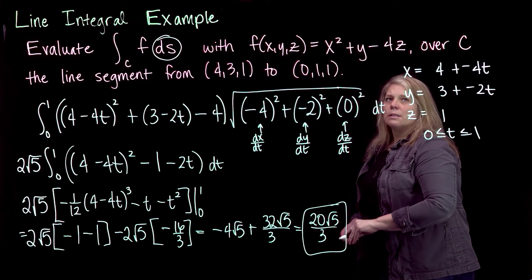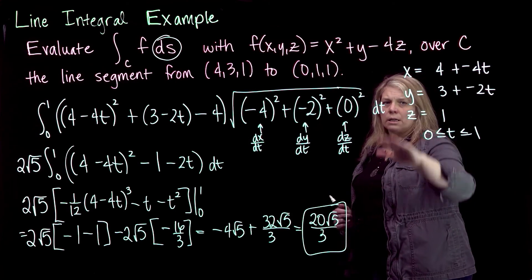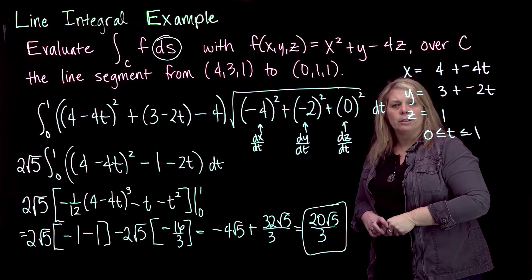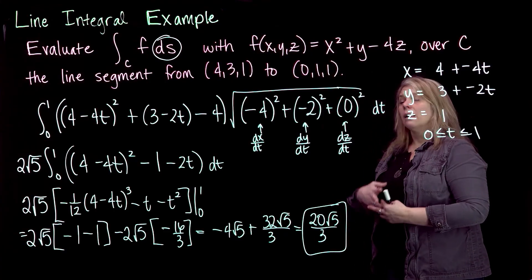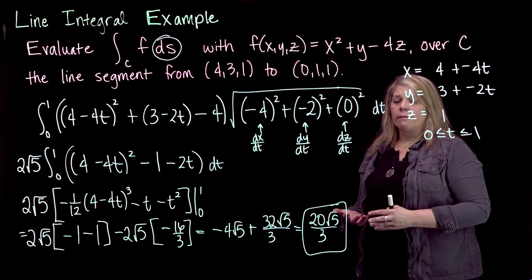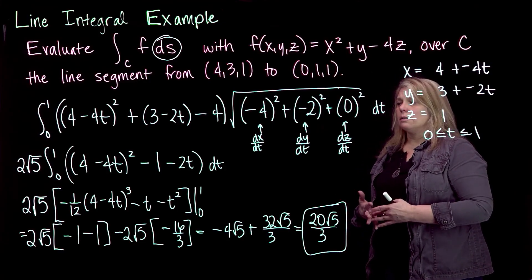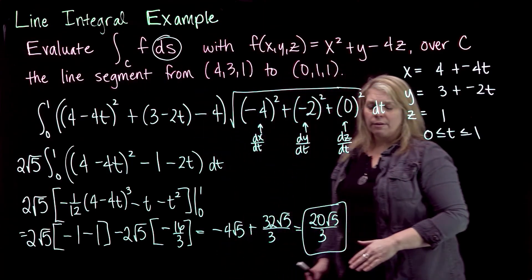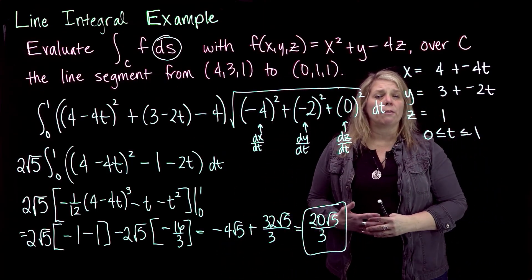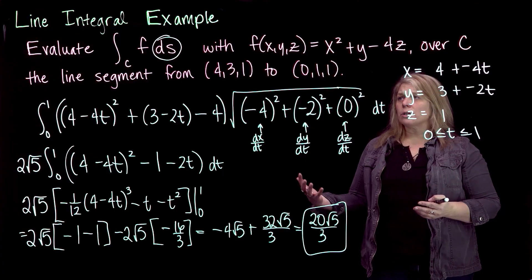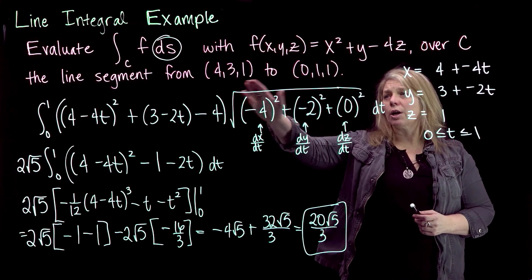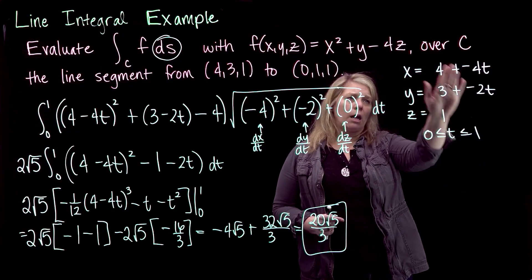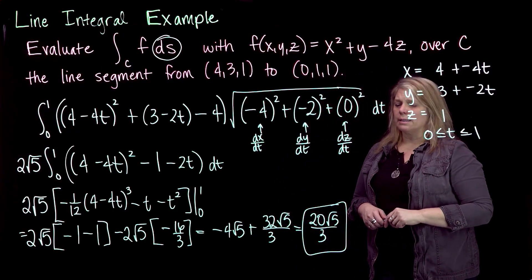Alright, so what that number represents is the total value of this function over this curve. We'll look at some application problems later in the chapter that have to do with density and things like that, lots of other applications too. Many of them to do with physics applications that have to do with looking at the total value of a function along a curve. We'll look at one more example for a line integral where the function that we start with is a little bit more complicated and the curve that we start with is a little bit more complicated, so writing the parametric equations for the curve takes a little bit more thought on this next example.